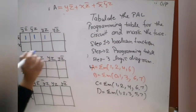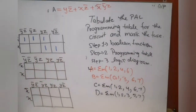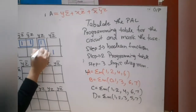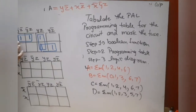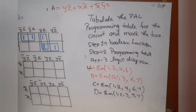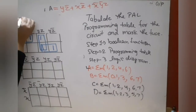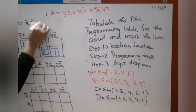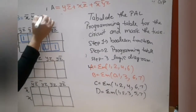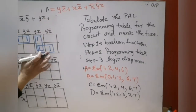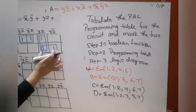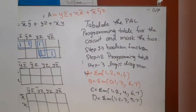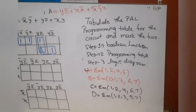For the K-map of B, the values are 0, 1, 3, 6, and 7. Grouping: the first pair gives x̄ȳ, the second pair gives yz, and the third pair gives xy. So B = x̄ȳ + yz + xy.